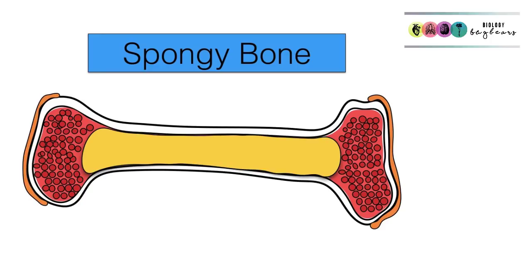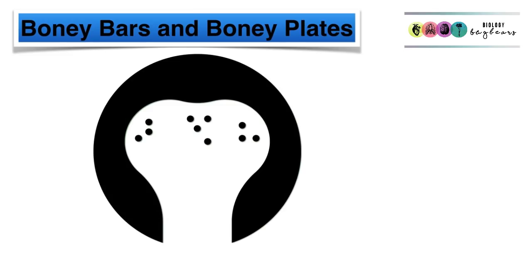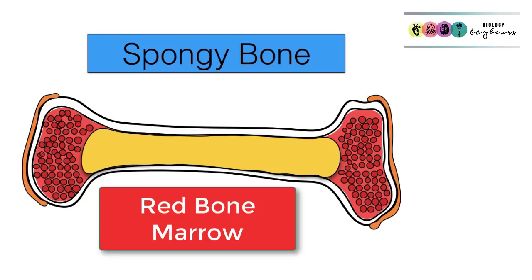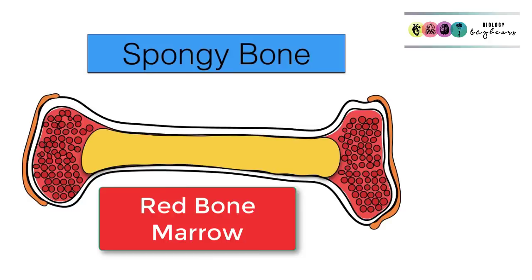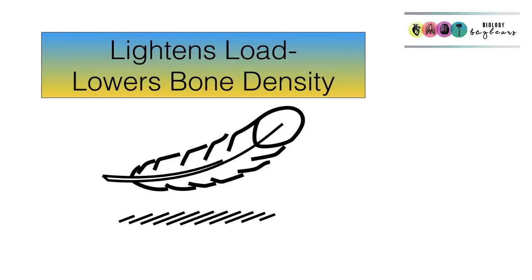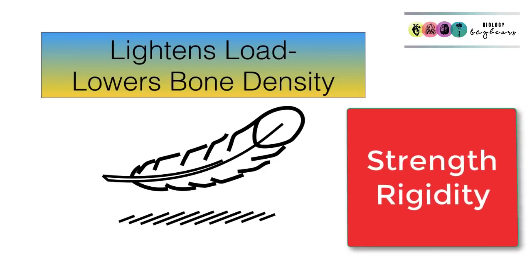The other type of bone is spongy bone, found in the epiphyses. It's made up of bony bars and bony plates, so it's not as dense as compact bone. There are lots of spaces, and in these spaces there is red bone marrow where the components of the blood — the blood cells — are made. Spongy bone lightens the load and lowers bone density, making bone lighter while still offering a great deal of strength and rigidity.